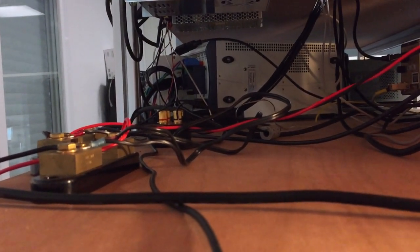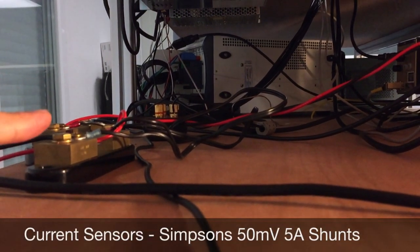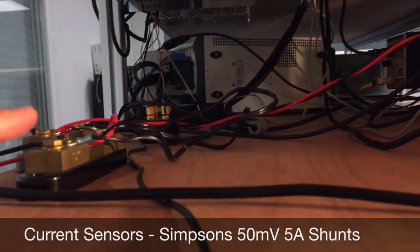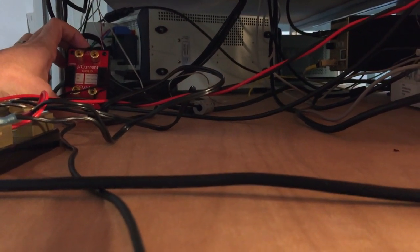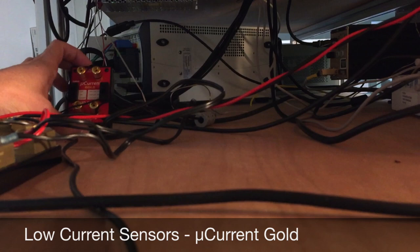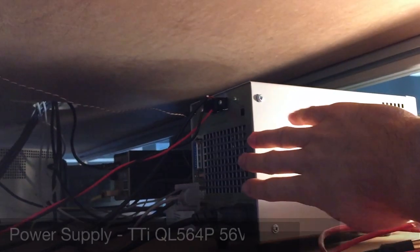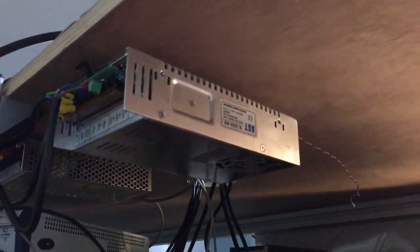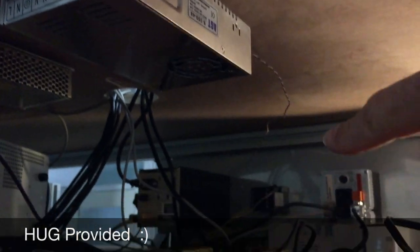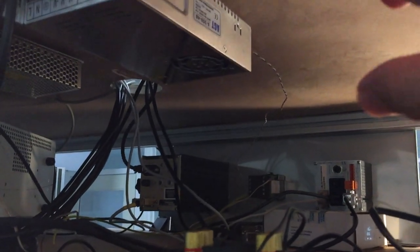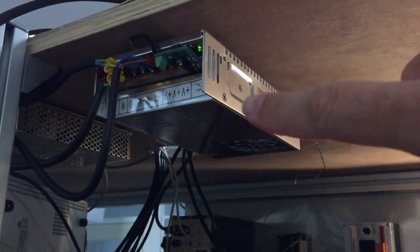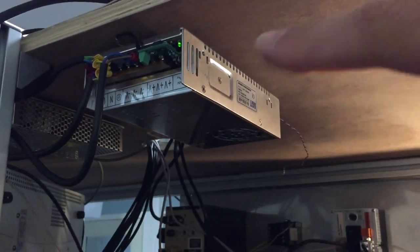On the back here we have shunt resistance to measure high current electrical input. Here we have Dave Jones microcurrent gold measurement system. That's the back of the power supply. We have another power supply that is controlled by the PID controller here. This gives the power to the surface resistance that heats up the room.